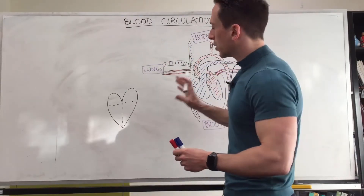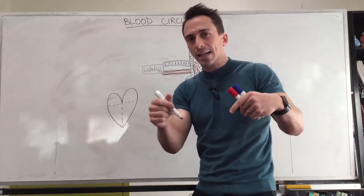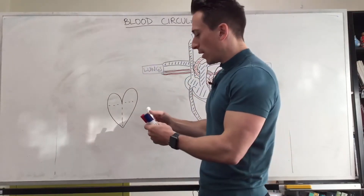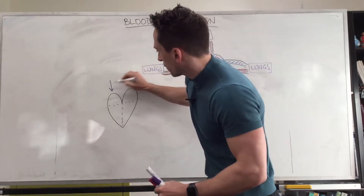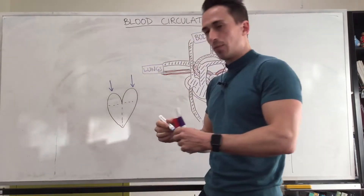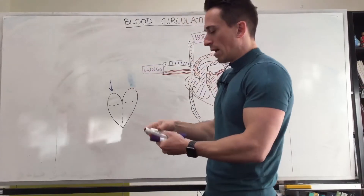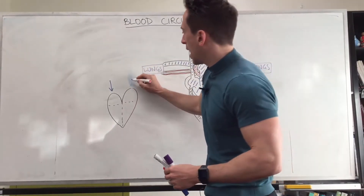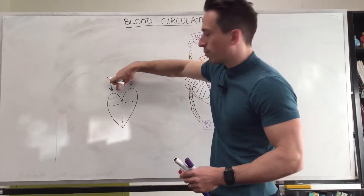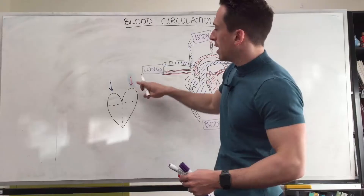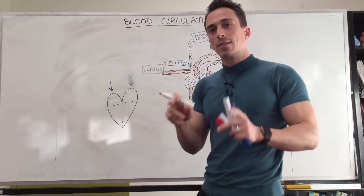The next point is that when we look at the heart, blood will always enter the atria — the chambers at the top. Always. Now we can color code this: blue entering the right hand side and red entering the left hand side. So that means deoxygenated blood, blood that has less oxygen in it, and oxygenated blood — and again both are entering the atria at the same time.